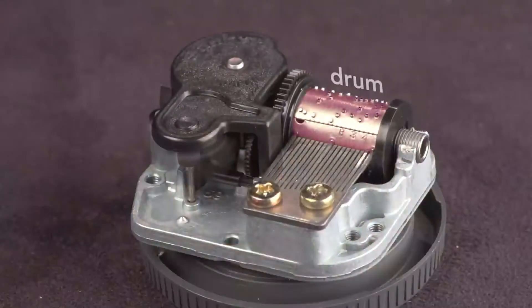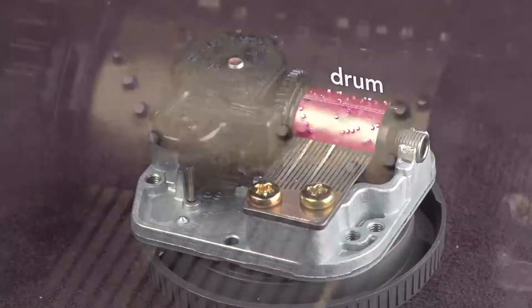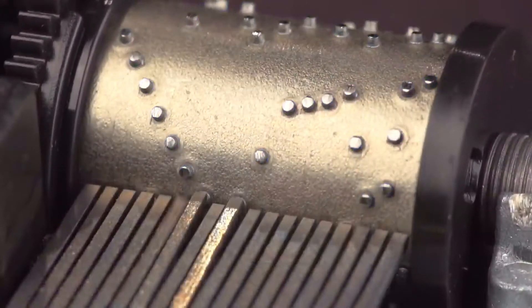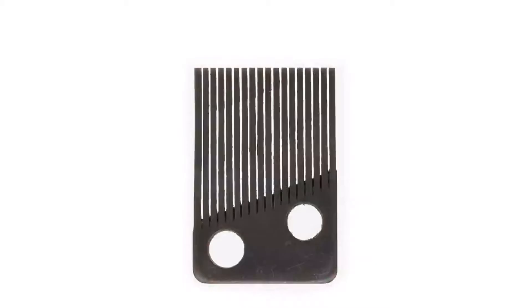The melody is programmed on this rotating drum. The drum has protrusions called pins that pluck the teeth of the comb. The comb is a piece of steel with 18 teeth. Each tooth is a note. Longer teeth are lower notes and shorter teeth are higher notes. The comb works like a multi-prong tuning fork.